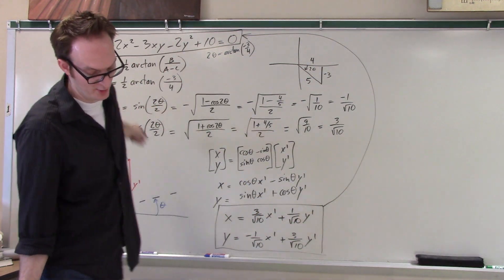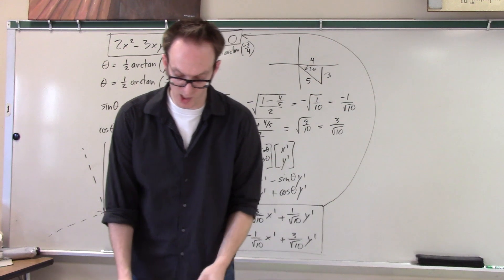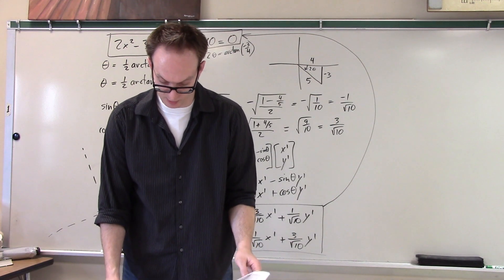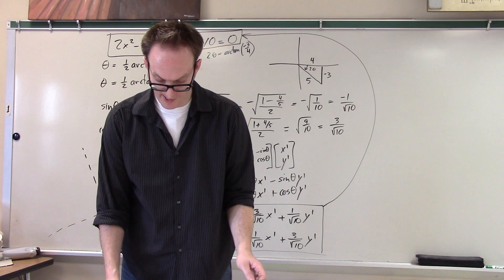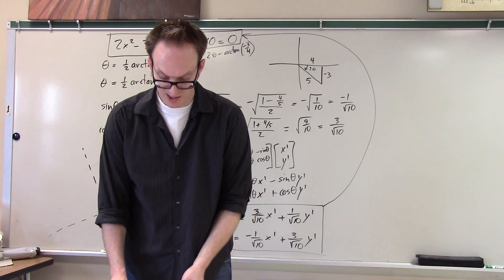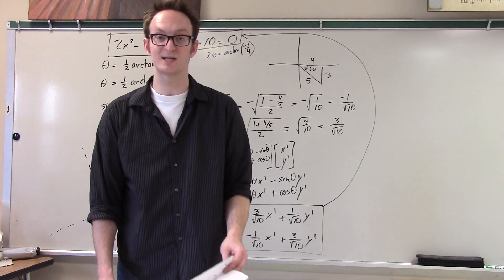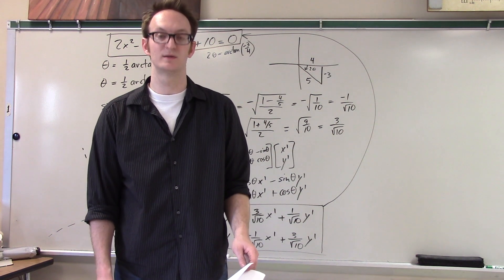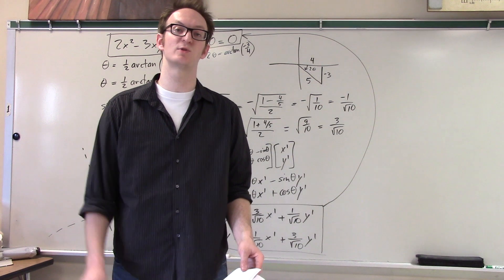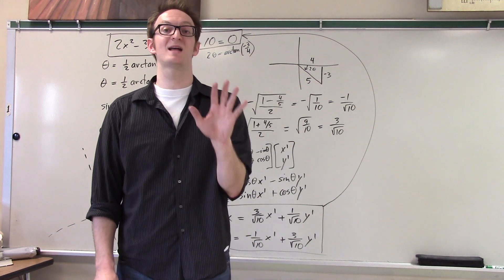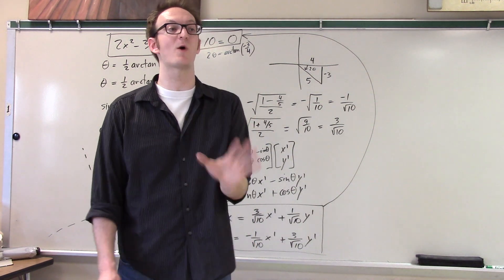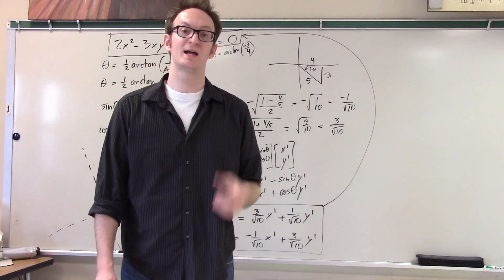And y is negative 1 over root 10 x prime plus 3 over root 10 y prime and assuming I did that correctly which I did these are now the equations that you are going to use and what you do is I think you guys get it by now is I take these equations and I plug them in to this formula. And since I have chosen with care the this angle if you plug those equations into if you plug these conversion equations into this formula then the you'll get a new equation in x prime y prime coordinates and there'll be no x prime y prime term.